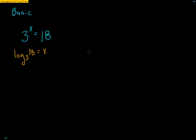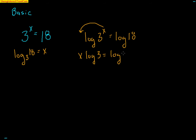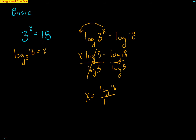Another way to solve is to take the log of both sides. The x falls down in front — that's one of our exponent properties. So we get log of 18 equals x times log of 3. Dividing both sides by log of 3 gives x = log(18) / log(3). Notice that's the same result: using the change of base rule on log base 3 of 18 gives log(18) divided by log(3), which is log base 10.